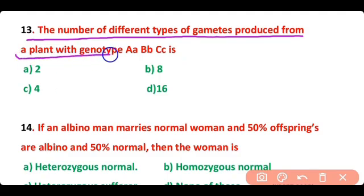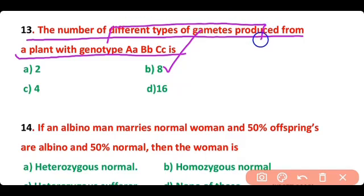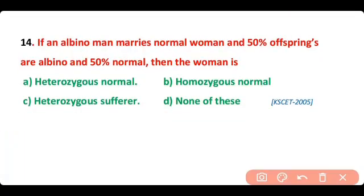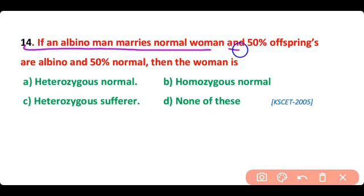Question number 13. The number of different types of gametes produced from a plant with genotype heterozygous A, heterozygous B, heterozygous C — so correct answer is option B. Eight different types of gametes can be produced from this combination of genotype.